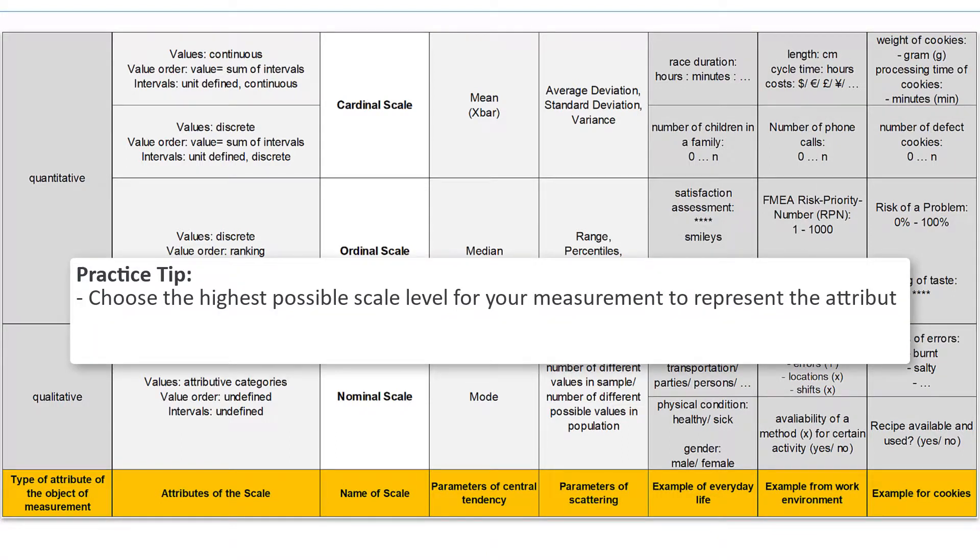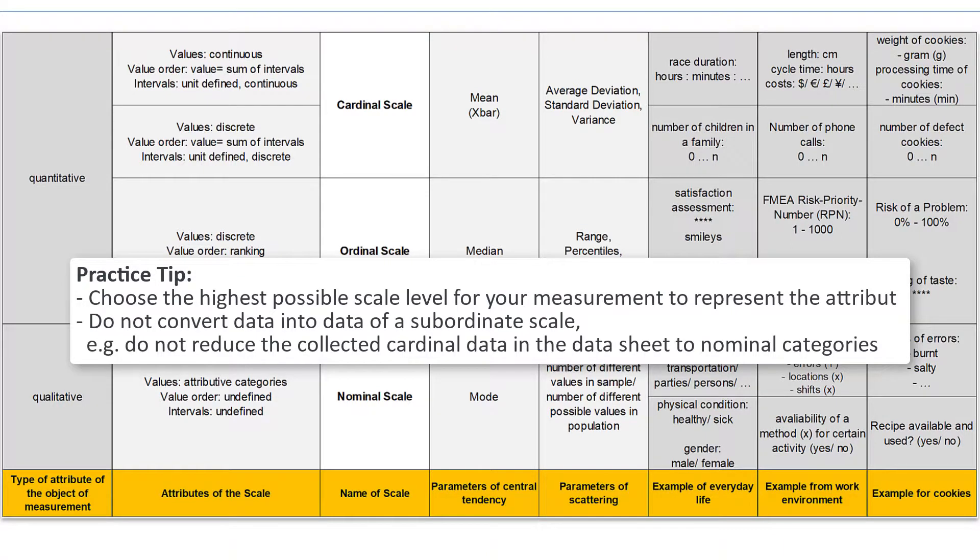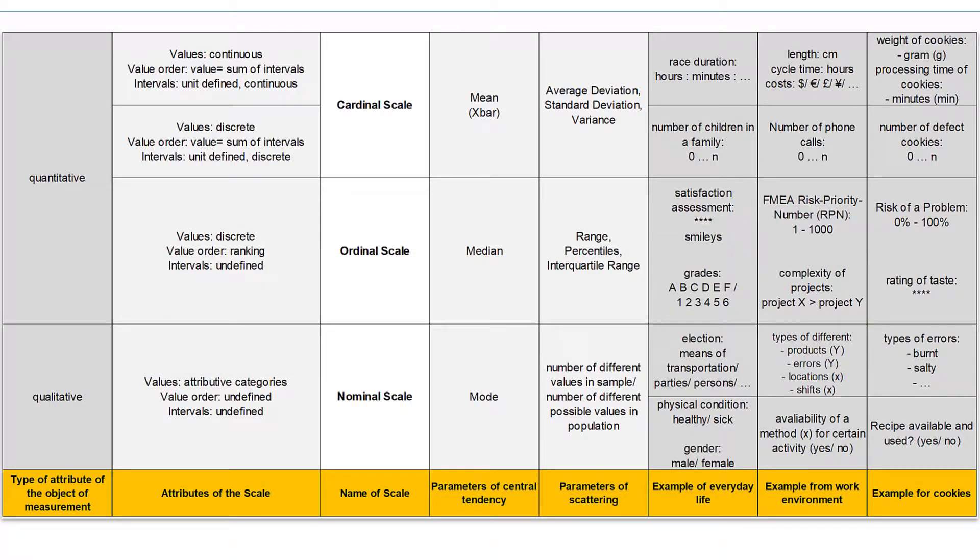Make sure you choose the highest possible scale for your measurements. I sometimes saw that for example the measured minutes on punctuality were assigned to categories too early, on time or too late. By transforming the cardinal scaled minutes data to nominal scaled records we are giving away information that we later cannot reconstruct from the categories if required. But of course we are free to categorize the measured minutes of a sample after we recorded them if desired.